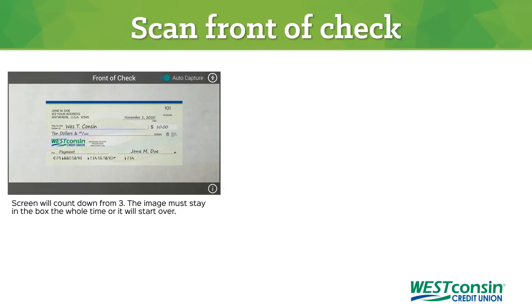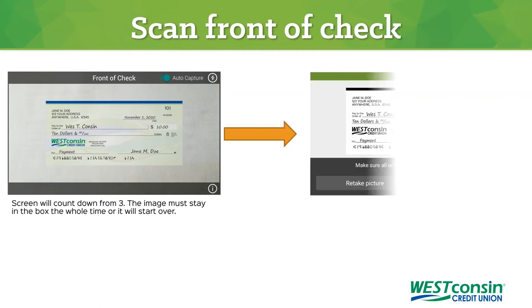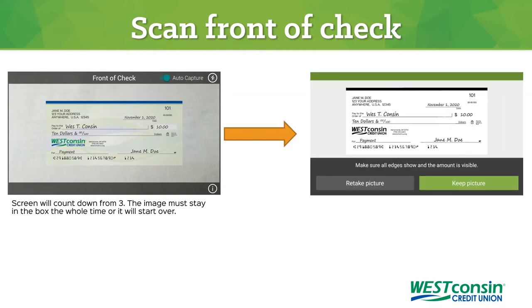Hold your phone over the front of the check. Once you are holding the phone in place, you will see a countdown on your screen. The check image must stay in the box during the countdown, or you will need to start over. If your photo shows all the edges of the check and the amount is visible, click keep picture.